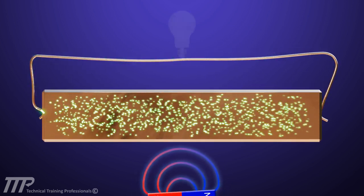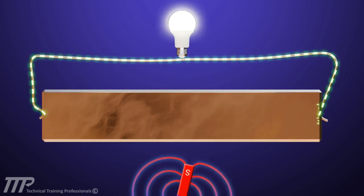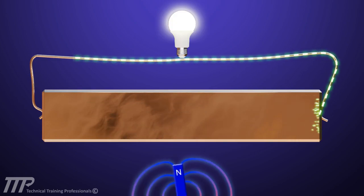Should a load or path exist for the current, the electrons will move through the load to the positive end of the conductor.